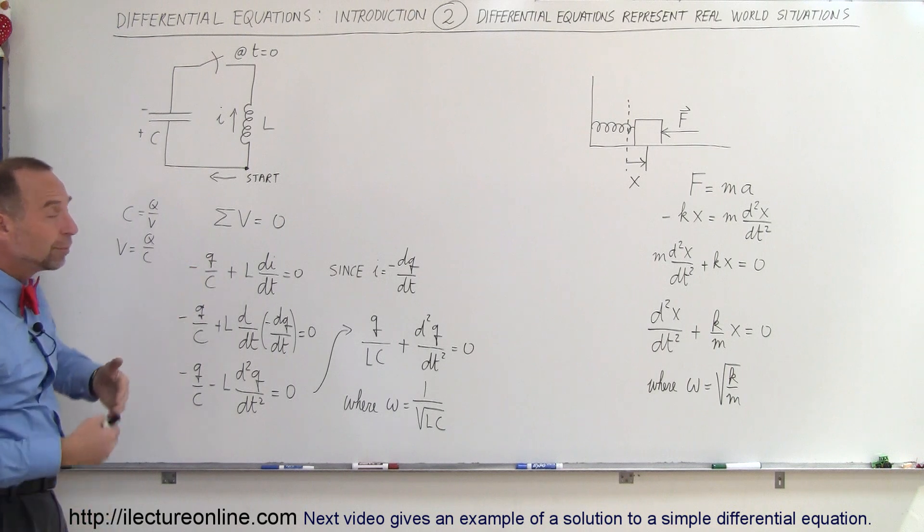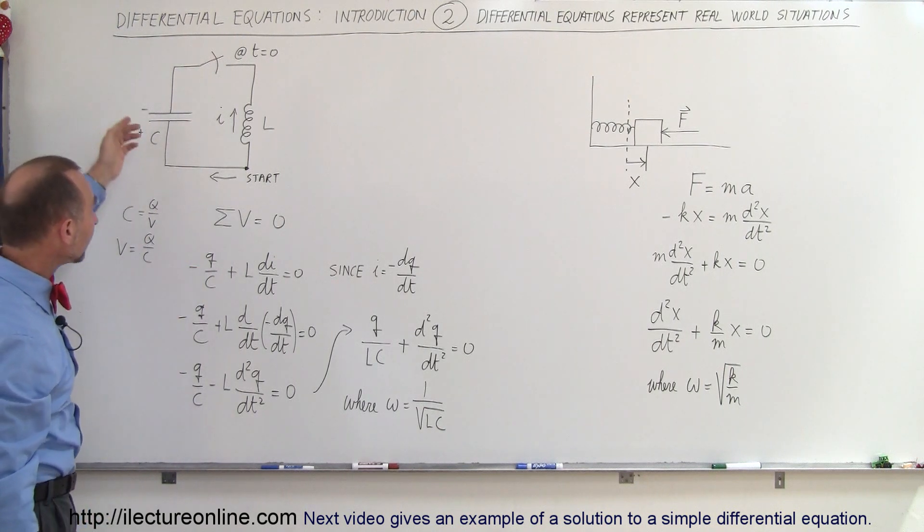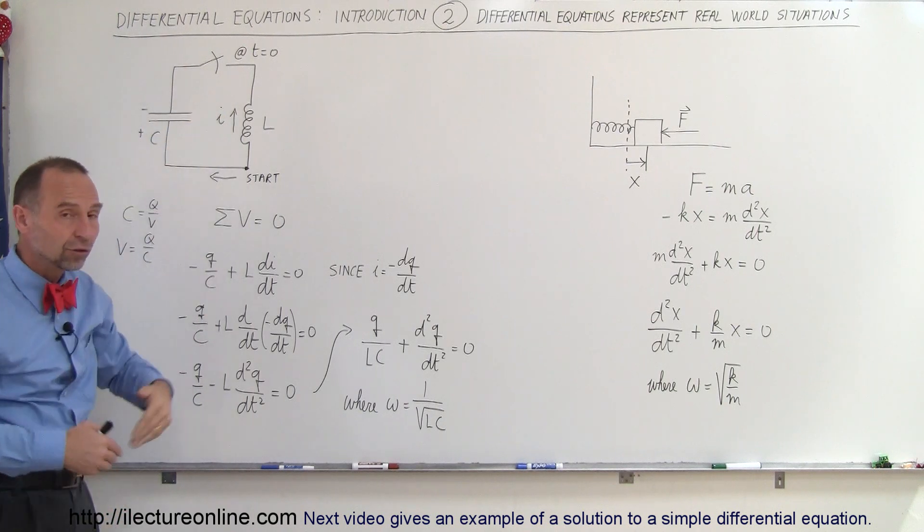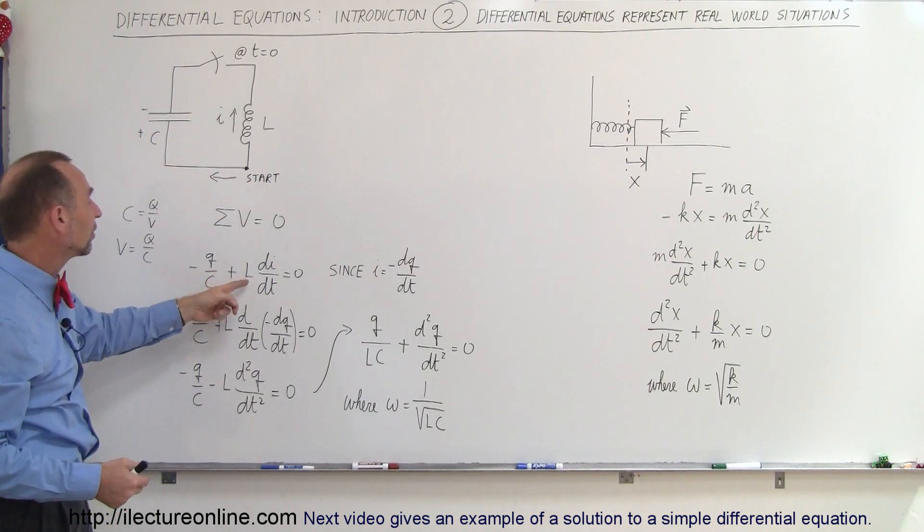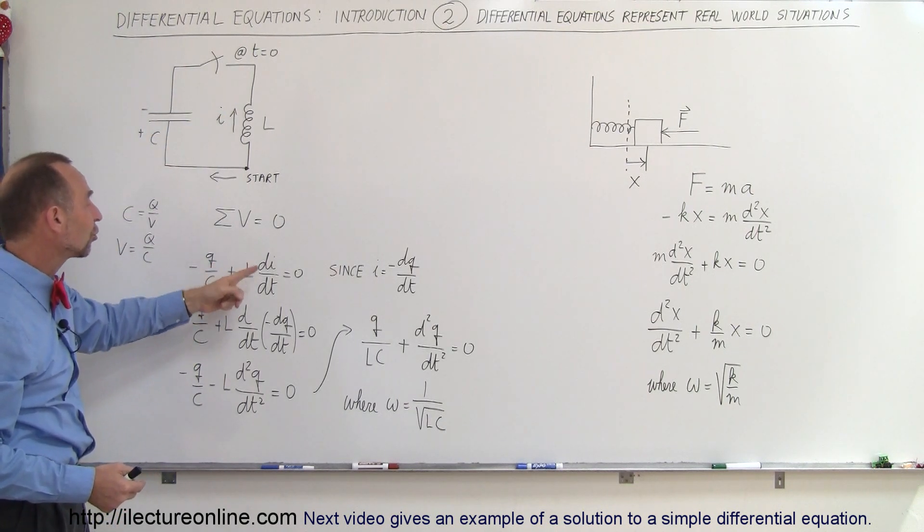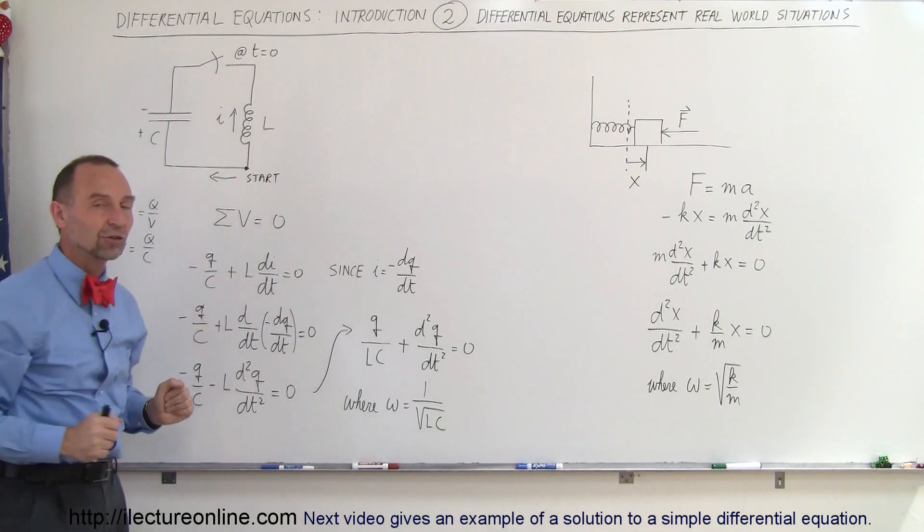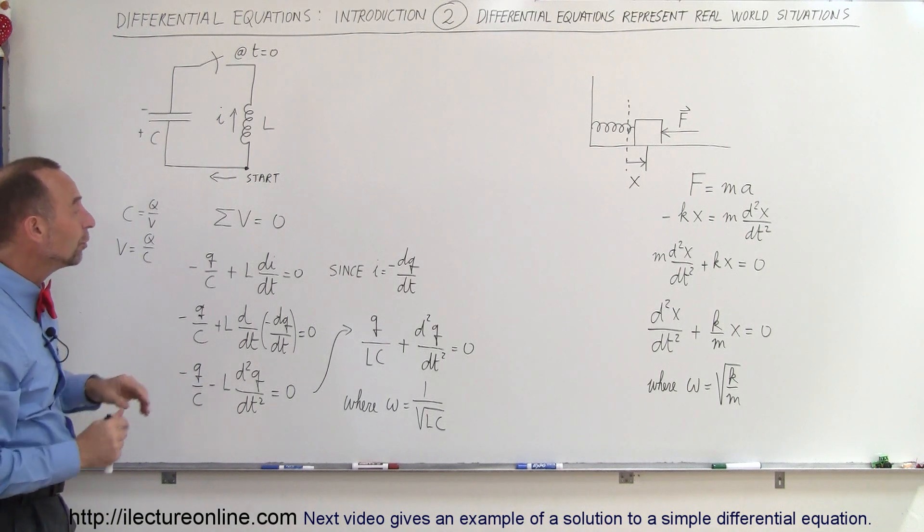The charge will be a function of time. Then we come across here, now we go across the inductor against the current, so that's the voltage rise, it's plus the inductance times the change in the current divided by time. We get back to the same spot, that's equal to zero, so here we have a differential equation.